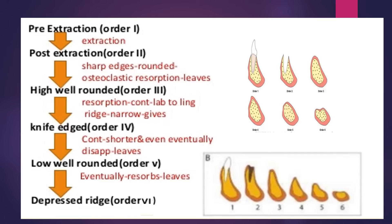Let's discuss the pathogenesis of residual ridge resorption in detail. The classification by Atwood is the most important classification for residual ridge resorption. He classified it into six orders — Order 1 to Order 6. Order 1 is pre-extraction, and immediately following extraction it becomes Order 2, which is post-extraction.